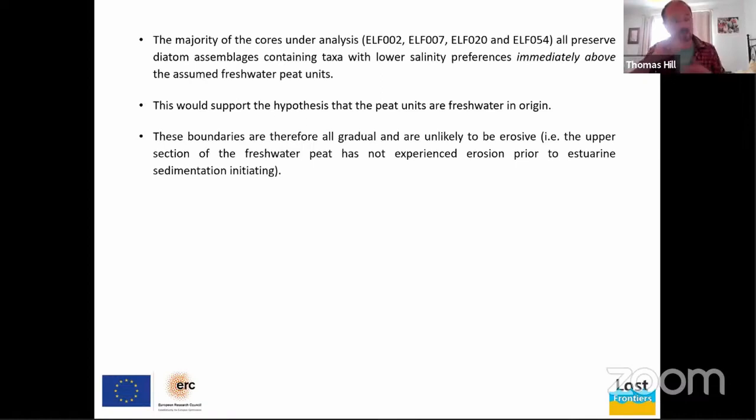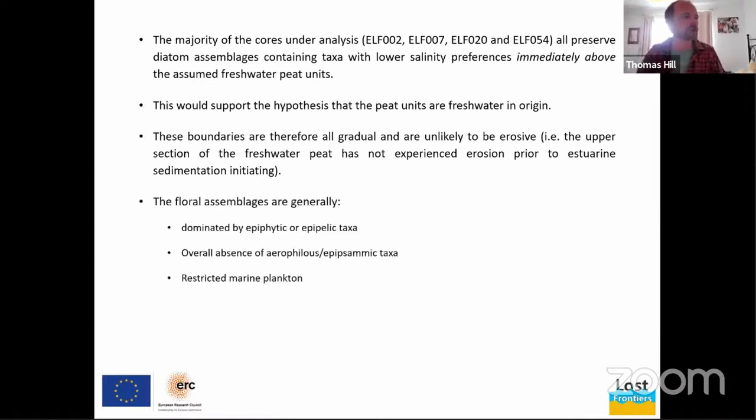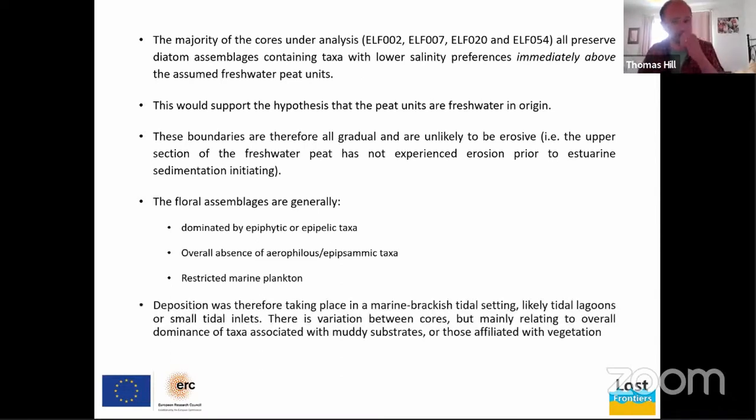These boundaries are therefore all gradual and also unlikely to be erosive. This is one of the things I think is very important in understanding the role of relative sea level change, because potentially you could have a section of the peat being removed prior to the marine deposits accumulating. But the fact that we have these low salinity preferring species immediately overlying would suggest that we're looking at a gradual, however you want to define gradual in terms of timescales, but a conformable shifting climate. And in general, the floral assemblages are dominated by either epipelic or epiphytic, and there is an overall absence of these taxa in the aerophilous taxa and epipsamic taxa, and generally restricted marine plankton. And based on this, we think we're looking at marine brackish tidal settings, likely tidal lagoons or small tidal inlets, rather than a very open coastline to account for these sort of assemblages being present.